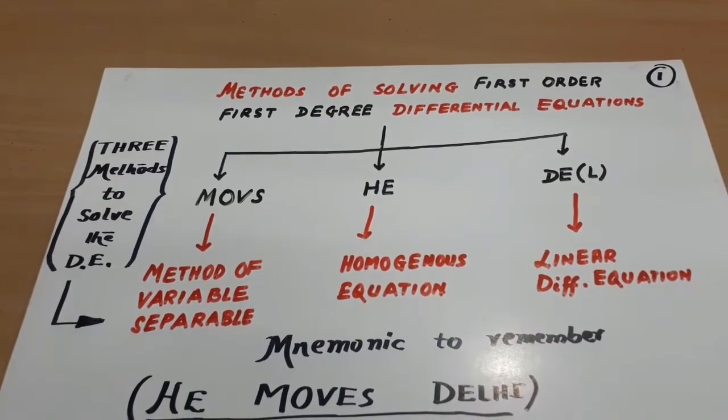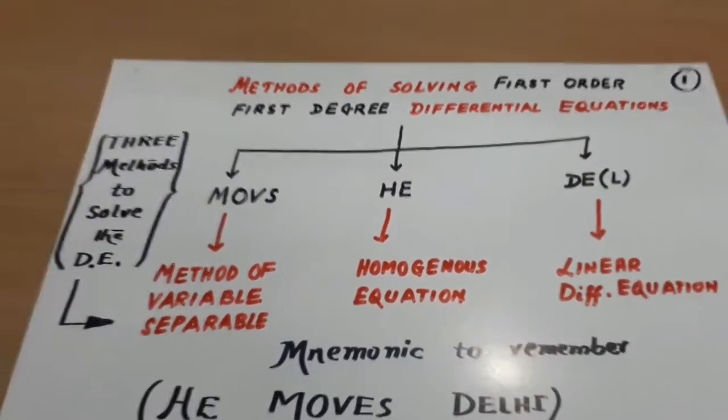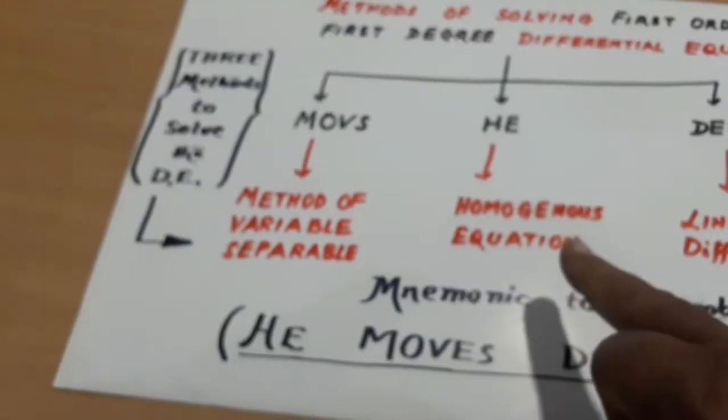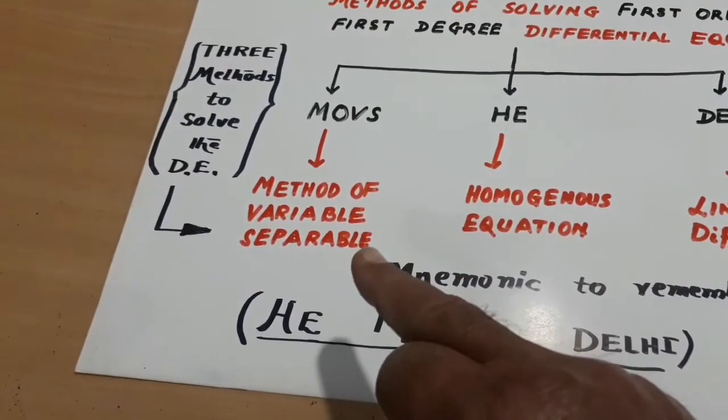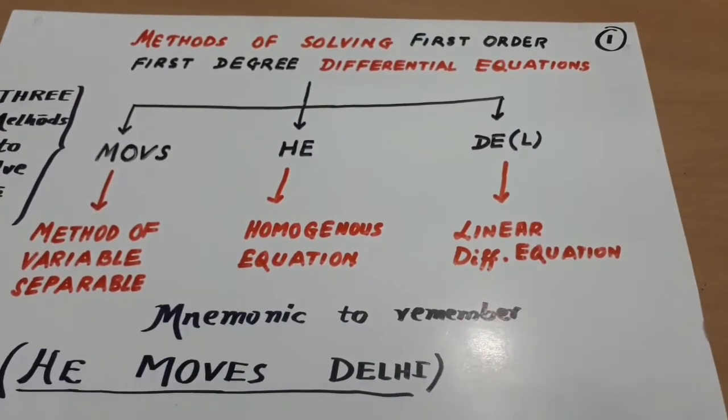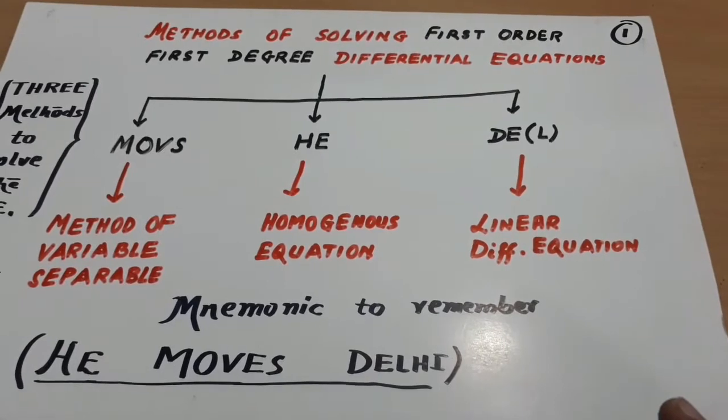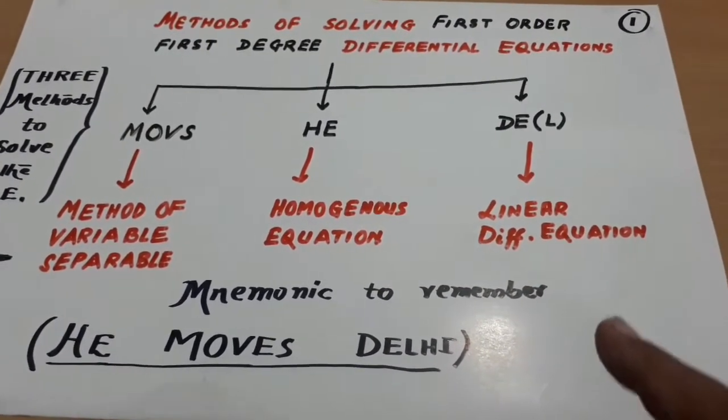Look here. HE stands for homogeneous equations. MOVES stands for method of variable separable. And DEL, Delhi, stands for linear differential equations.